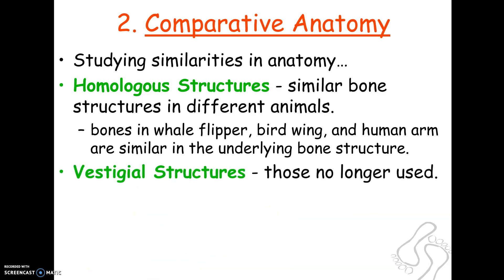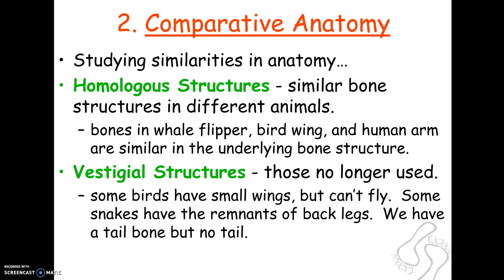We also look at vestigial structures — structures that don't seem to have a use today, but perhaps in our ancestors did have a use. For example, humans have a tailbone but no actual tail; maybe our ancestors did have tails. Some snakes have remnants of back legs. Whales have hip bones implying they came from an organism that lived on land. Birds have wings that can't fly. Fish have eyes but are blind. These structures imply they came from an ancestor where the structure did have a use, but it no longer does.